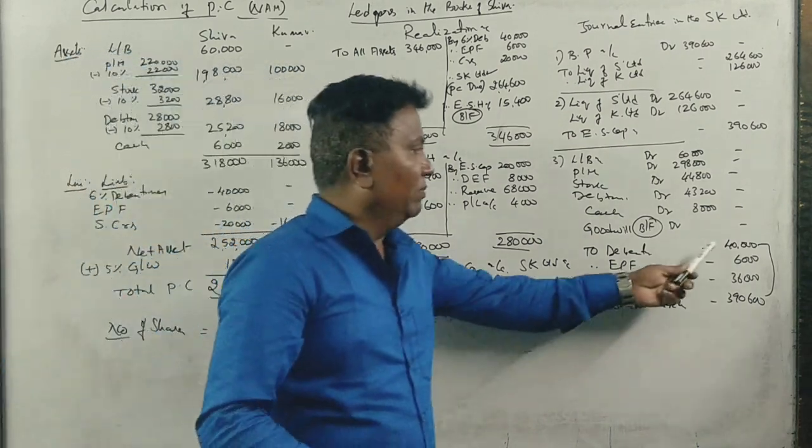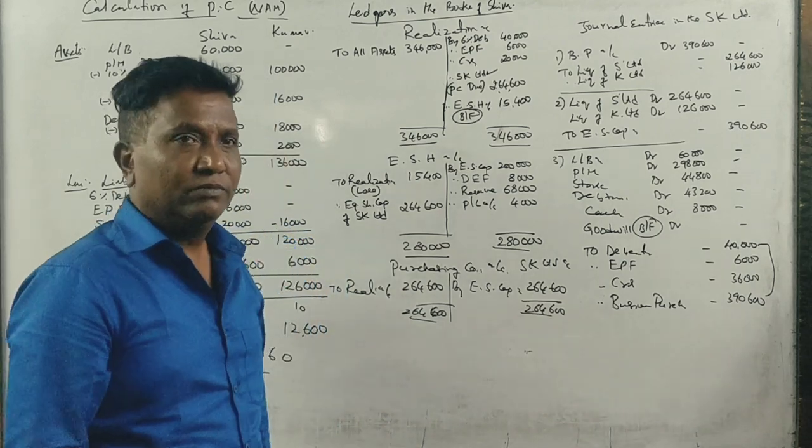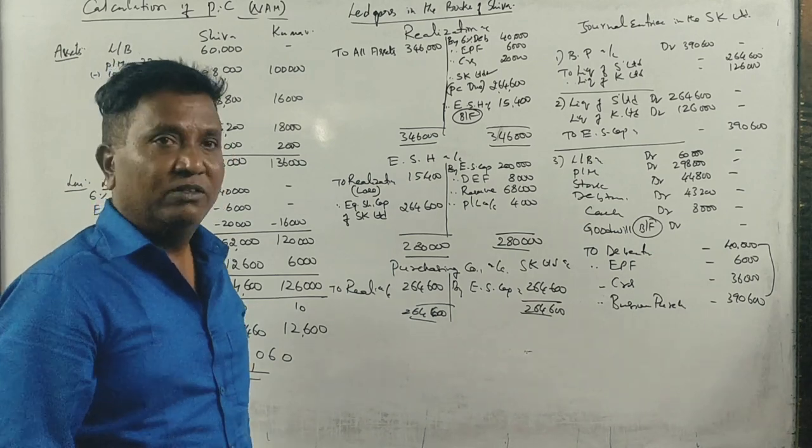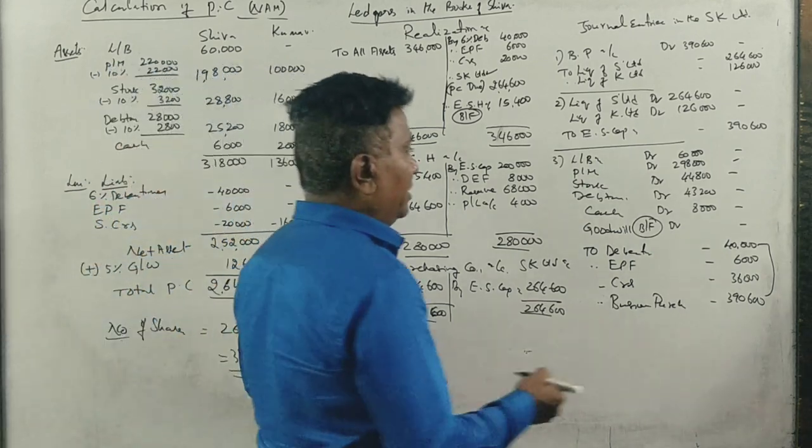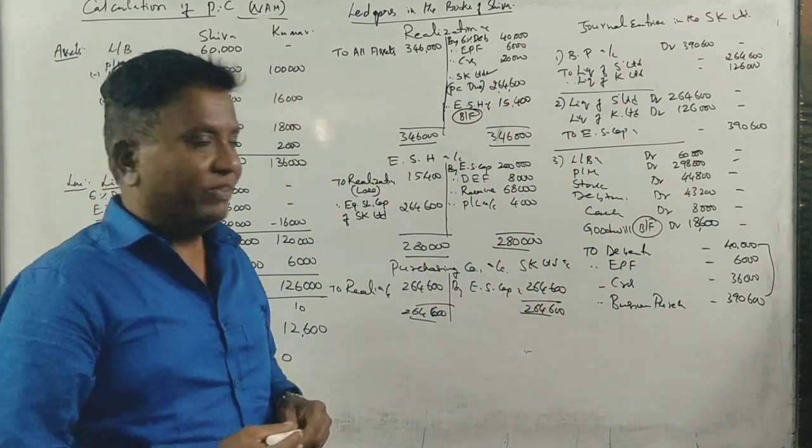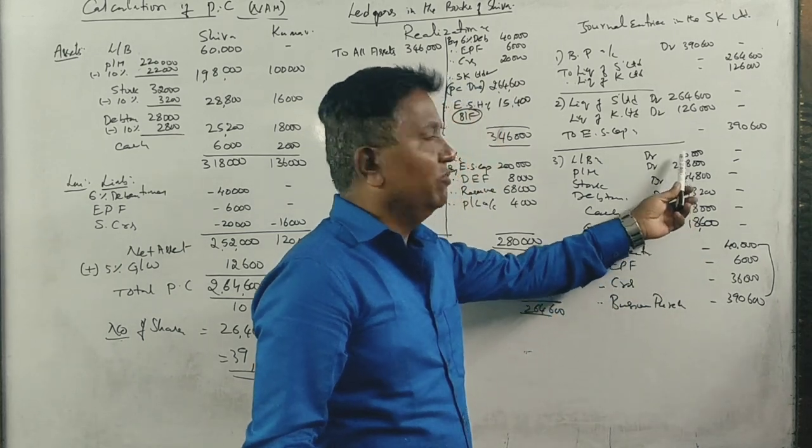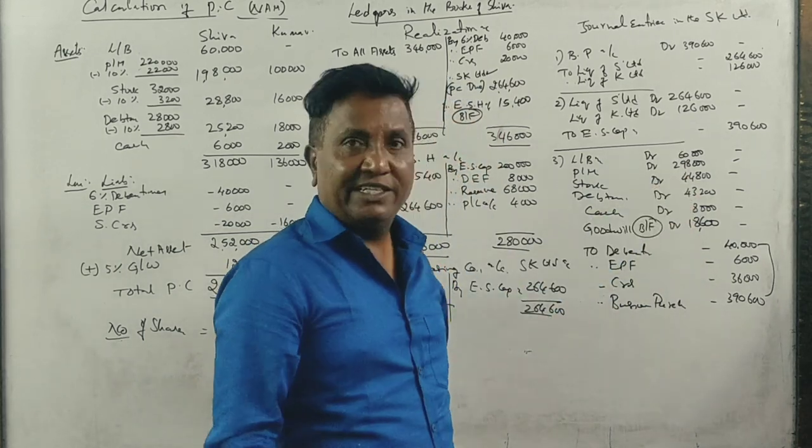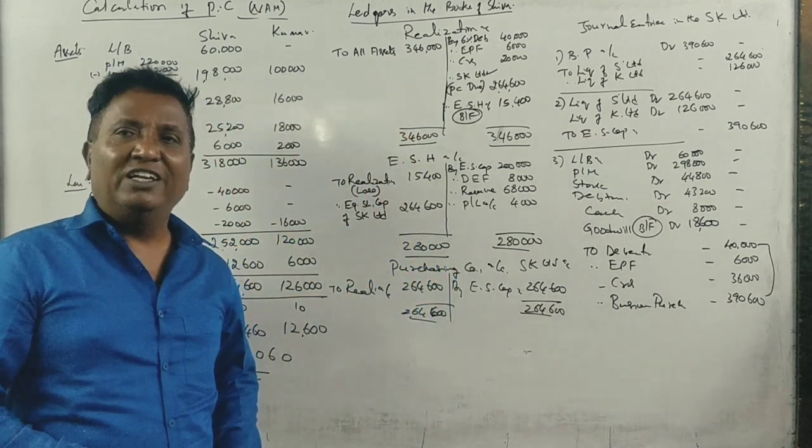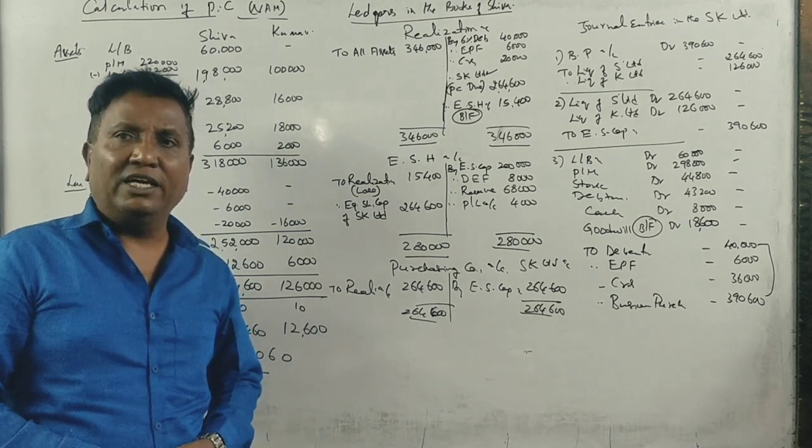Total minus total, 18,600. Goodwill of 18,600 is the balancing figure. Total now 3 lakhs 90,600.